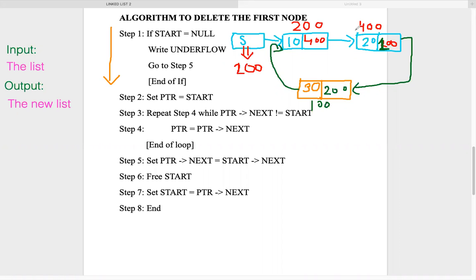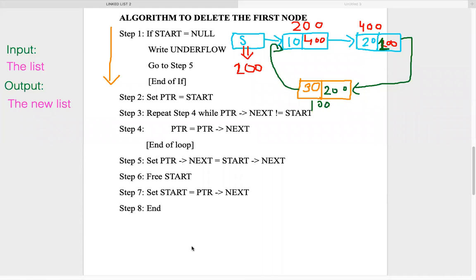If the list is not empty, we set ptr to the start node and traverse to find the last node, checking ptr->next == start at each step. When ptr->next is not equal to start, we advance ptr. We continue until ptr->next equals the start address — then we have reached the last node and stop.